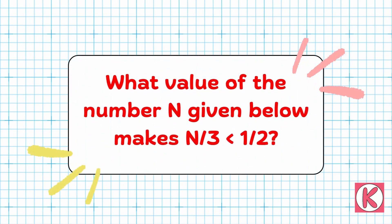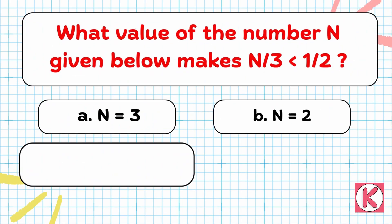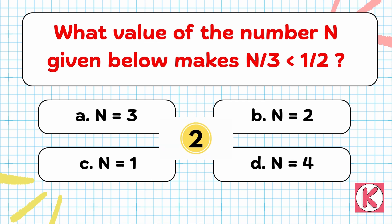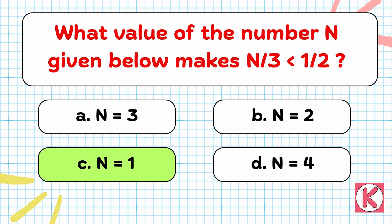Next question. What value of the number N given below makes N by 3 less than 1 by 2? Right answer: Option C — N is equal to 1.